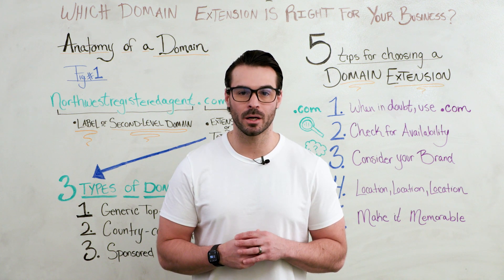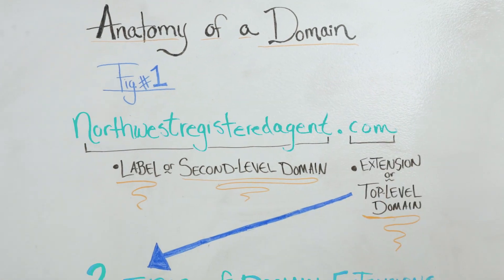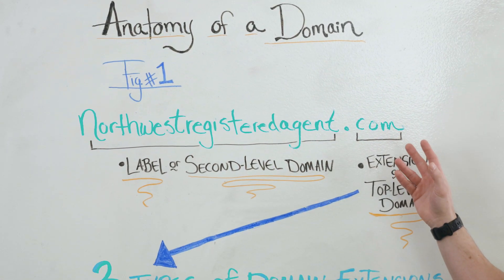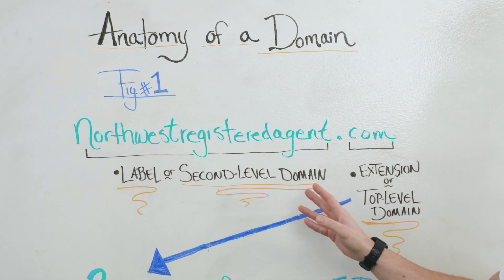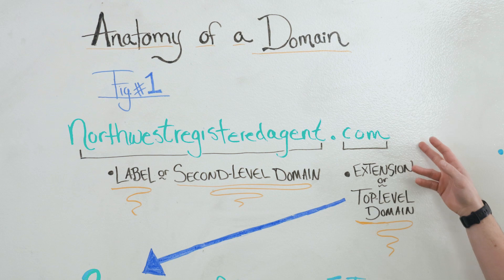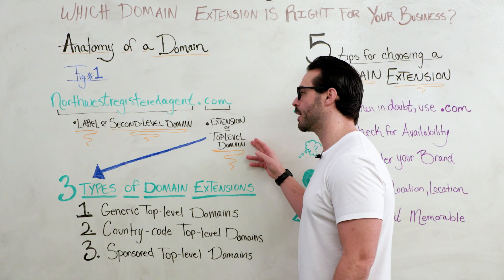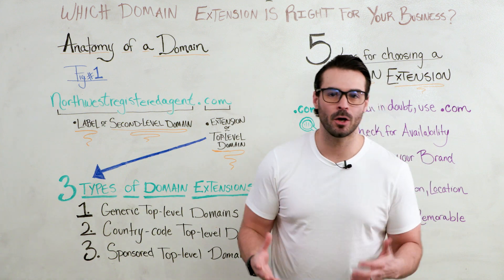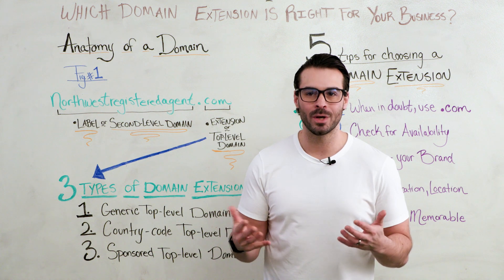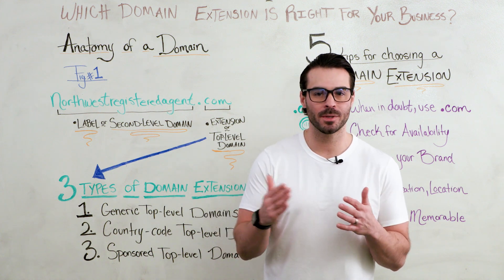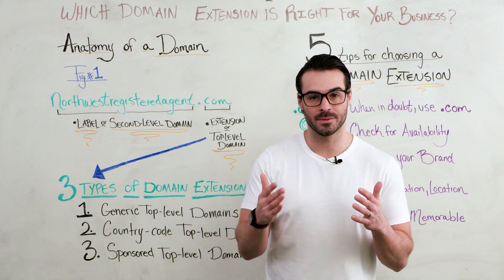Let's take a look at the anatomy of a domain. Using the example NorthwestRegisteredAgent.com — 'Northwest Registered Agent' is the label or second level domain, and '.com' is the extension or top level domain, which is what we're focusing on today. A domain extension helps readers or computers know a website's category or type. For example, .biz would indicate a commercial business, whereas .org would indicate a non-profit organization.